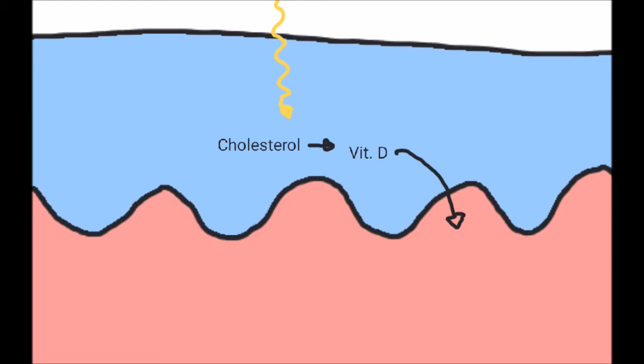Without adequate vitamin D, the body cannot absorb enough calcium, and especially if the bones are growing, this can lead to weakened bones, or a condition called rickets. It takes about 10 to 15 minutes of sun exposure every day to get enough UV light.